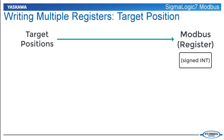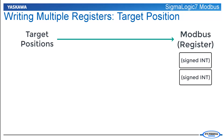Commanding target positions will require more data manipulation. The range of target positions is too large to fit within one 16-bit register; therefore, the user must split the number into two consecutive signed integers and write them to registers starting at 40033. Register 40033 will contain the least significant word, also known as the low word, and register 40034 will contain the most significant word, known as the high word.